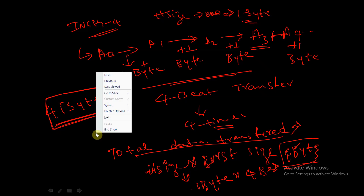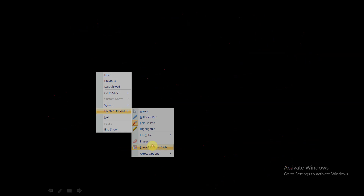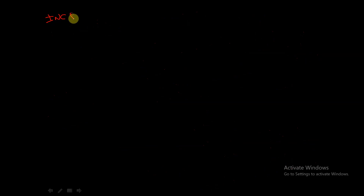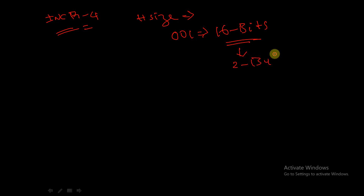Let us take the same burst, but we will change the data size. For example, we are taking the same INCR4, and the size of the data — its size is equal to 0b01, which is equal to 16 bits, that is 2 bytes.